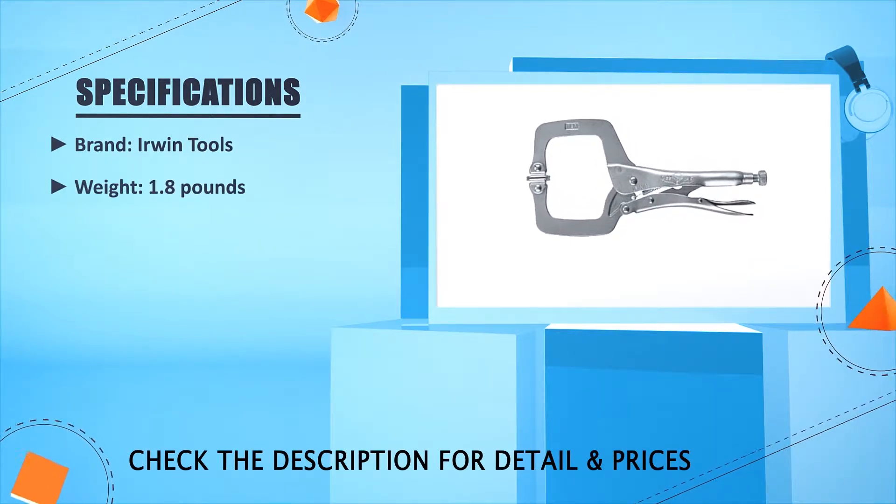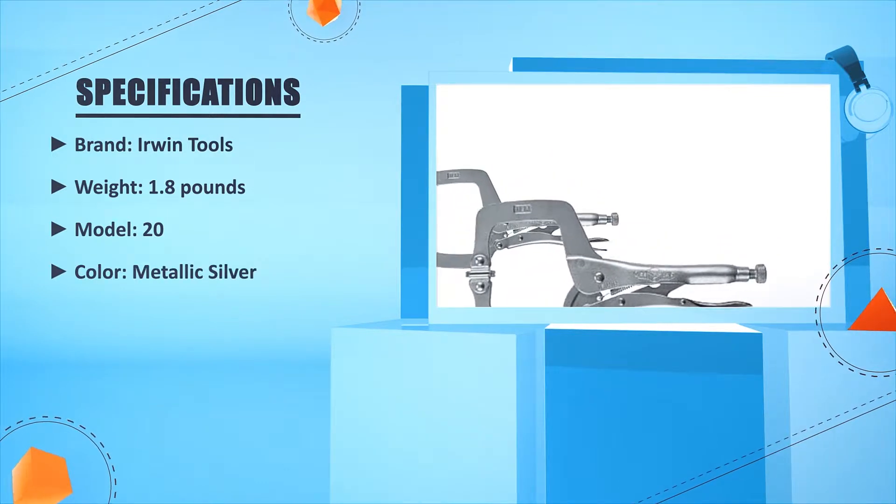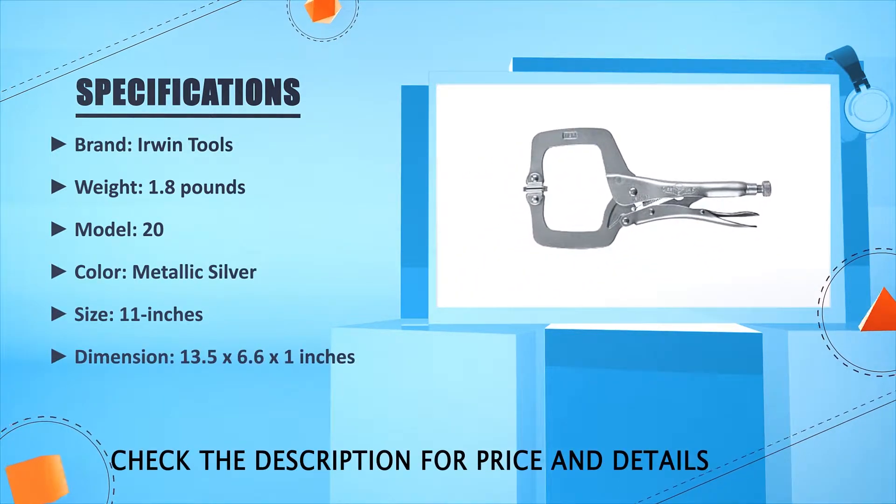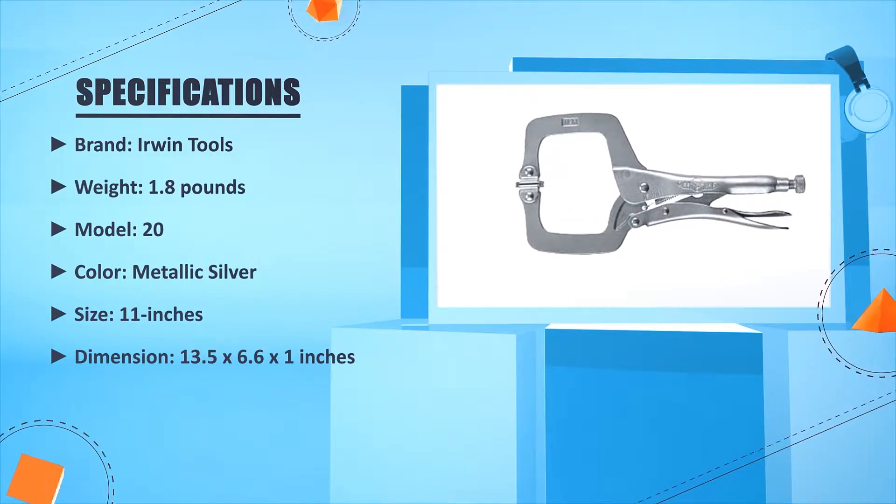Irwin rules. 1.8 lbs. 2.0. Metallic silver. 11 inches. 13.5 in 2.6.6 in 2.1 inches.